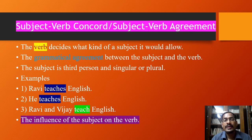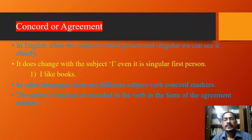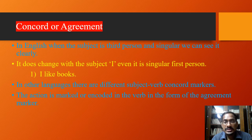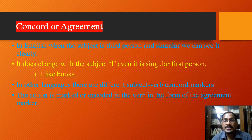This phenomenon is called subject-verb concord. In English, there is a relationship between subject and verb, and this concord or agreement is physically seen when the subject is third person and singular. But if the subject is singular and not in third person, the verb does not change. For example, if the subject is 'I,' the verb does not change: 'I like books.' Here, 'I' is the subject and 'like' is the verb. The subject is singular but the verb is not changed, because it is not in third person. It only changes when the subject is singular and in third person form.